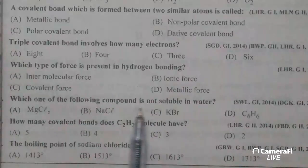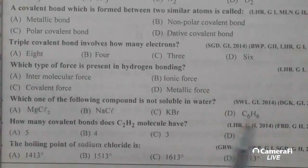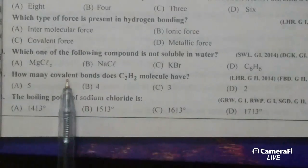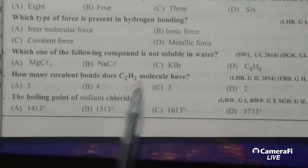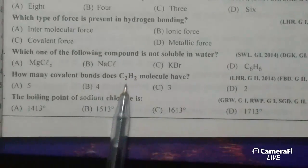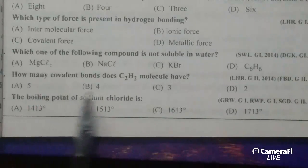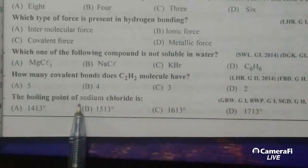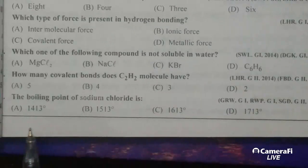Which one of the following compound is not soluble in water? Benzene C6H6 is not soluble in water. How many covalent bonds does C2H2 molecule have? Total covalent bonds 5, carbon to carbon atom 3 and 2 hydrogen atoms, total 5 covalent bonds. The boiling point of sodium chloride is 1413 degree centigrade.